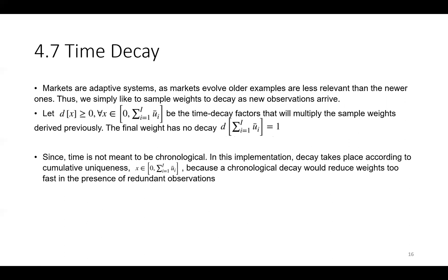So the final weight has no decay, meaning the decay factor is equal to 1. Since time is not meant to be chronological in this implementation, decay takes place according to cumulative uniqueness, because a chronological decay would reduce weights too fast in the presence of redundant observation.